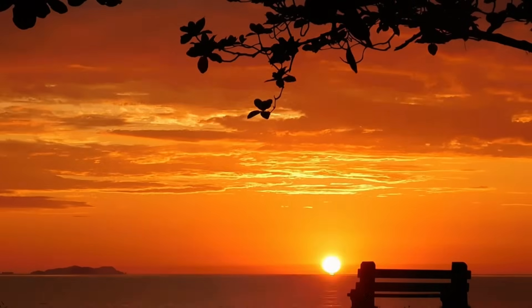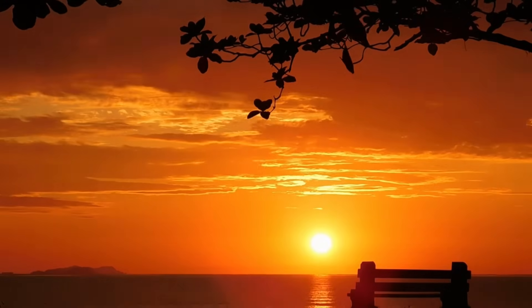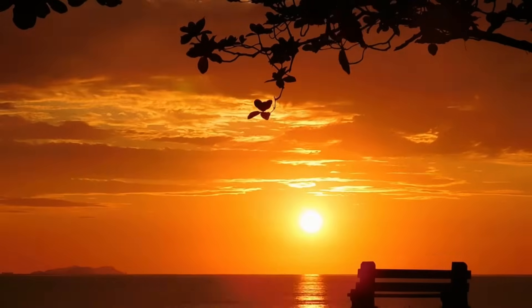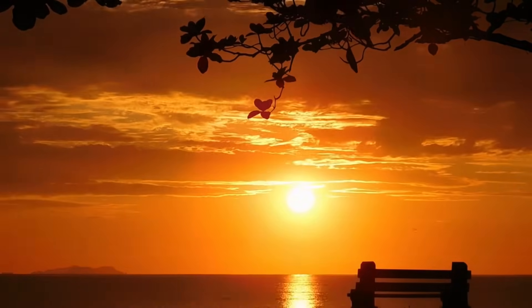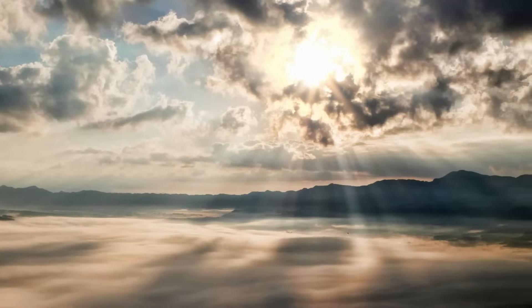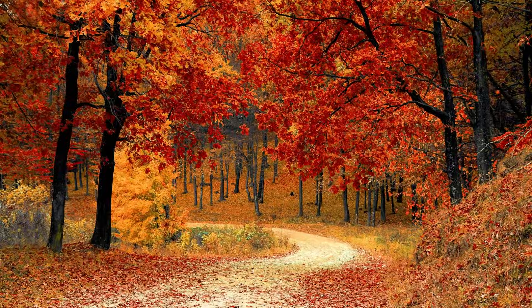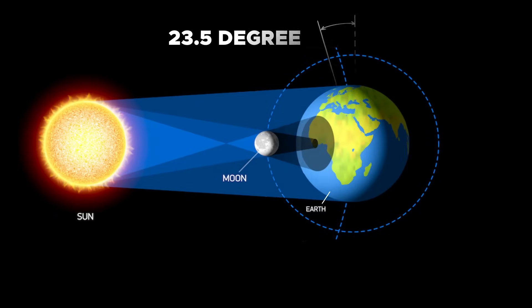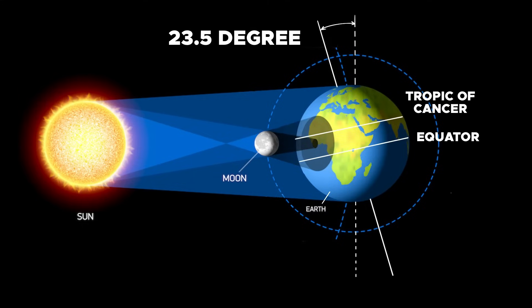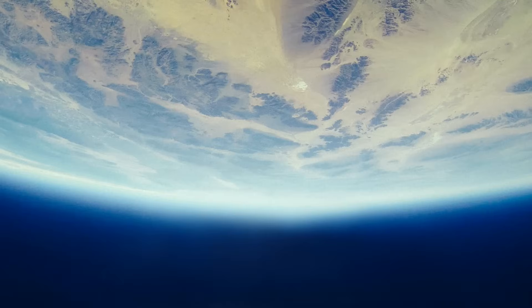You might have noticed that the sun is not rising at the same point in the east throughout the year — it changes its position gradually. But do you know that this change in sunrise location is the reason for the change of seasons on earth? The earth is tilted 23.5 degrees on its axis, and the Tropic of Cancer is the highest latitude in the northern hemisphere beyond which earth doesn't receive vertical solar radiation.